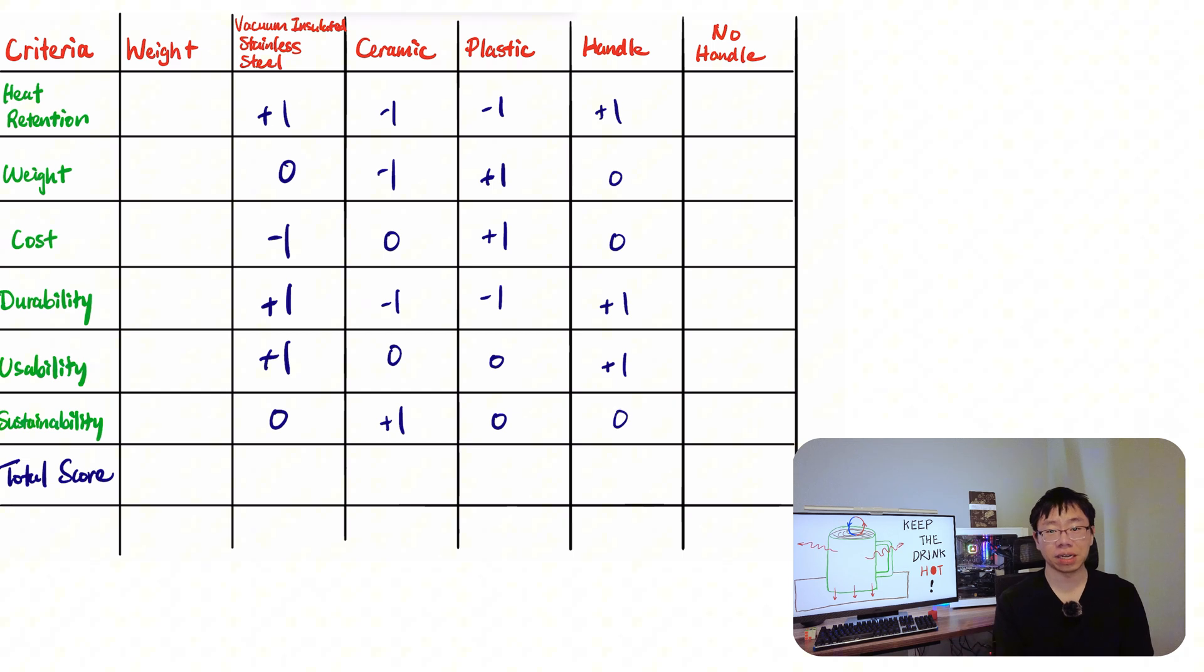Each design gets assigned a score for each criterion based on how well it performs. A positive one means it's better than the baseline, a negative one means it's worse, and zero just means it's neutral. We then multiply these scores by the weight of each criterion and sum up all the rows. A weight of five for heat retention means we care about this criterion the most, and a weight of one for sustainability means it's nice to have but we don't care about it too much. Based on our analysis, the vacuum insulated stainless steel and handle designs are the top performers for different reasons.